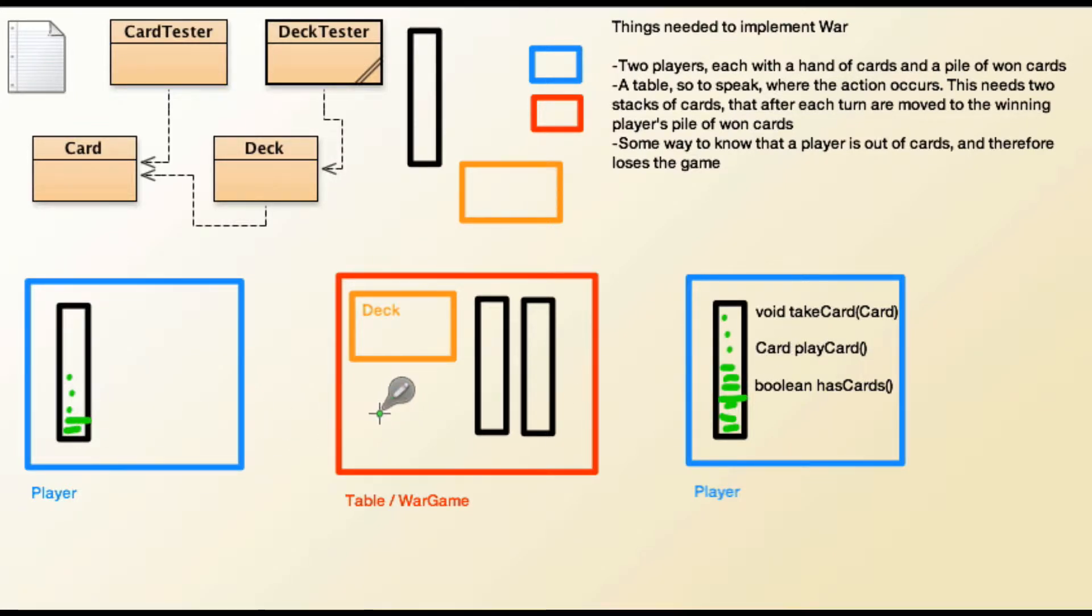So from over here, we would call this player's playCard method. And it would remove the card at the zero position here. And if you're not remembering all of the array list methods, go get your book out and go to the page that has the list of the array list methods.